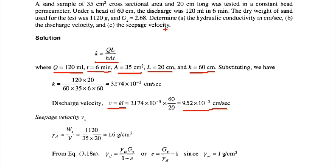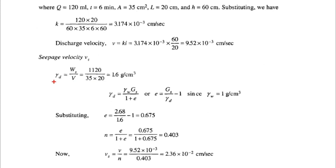Now we find the seepage velocity vs. The formula is vs = v / n, where v = 9.52 × 10⁻³. To find n, we first need the void ratio e. We know gamma_d = Ws / V, so gamma_d = 1120 / (35 × 20), which gives 1.6 gram per centimeter cube.